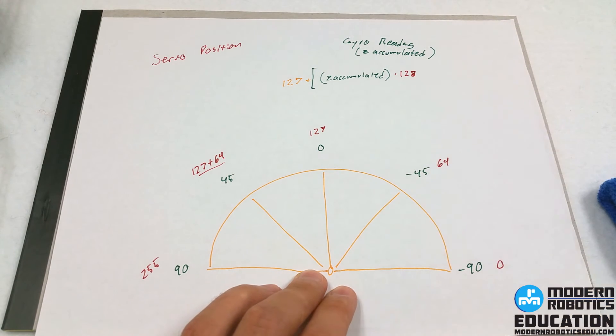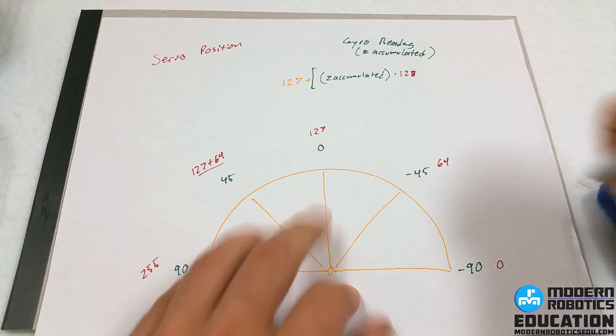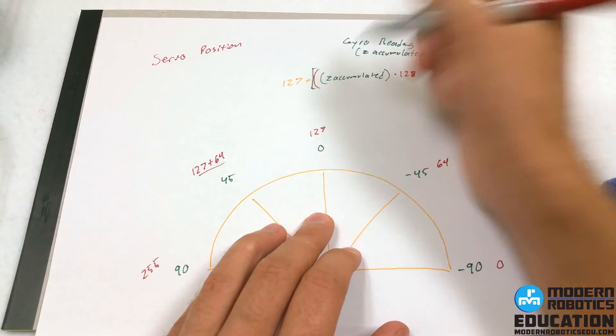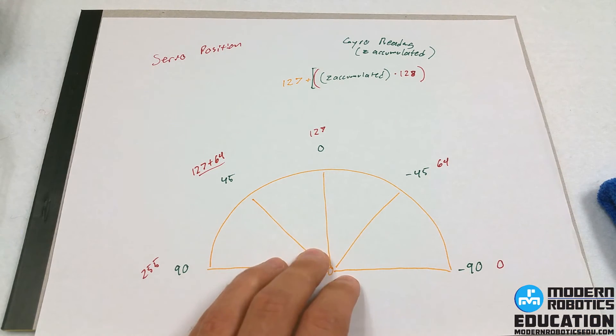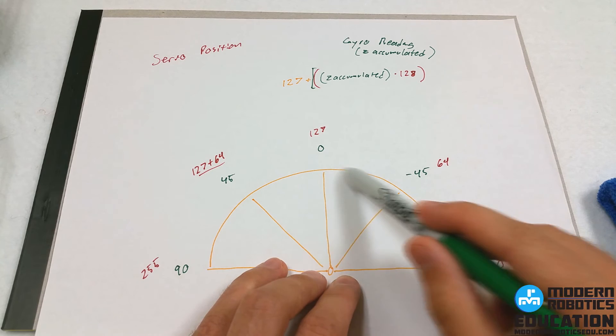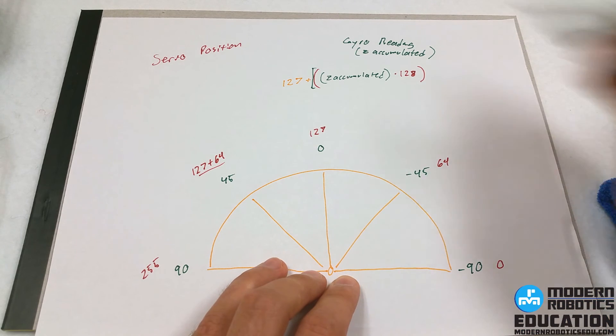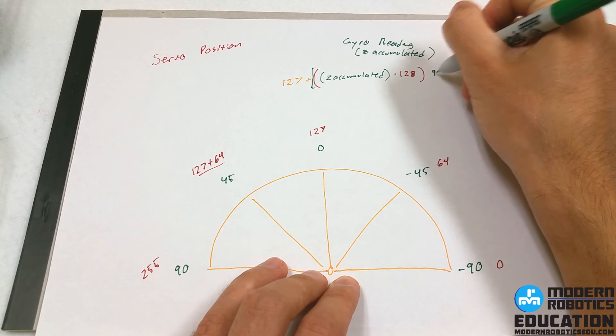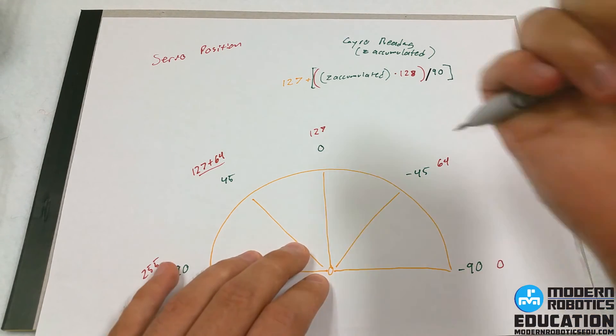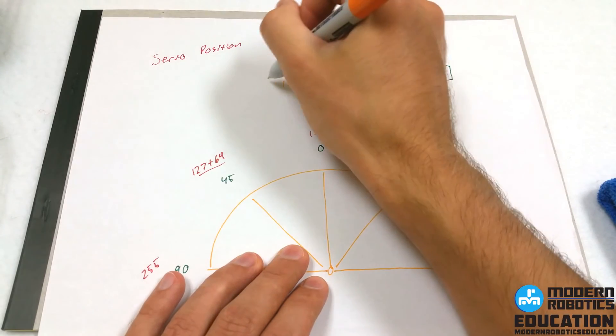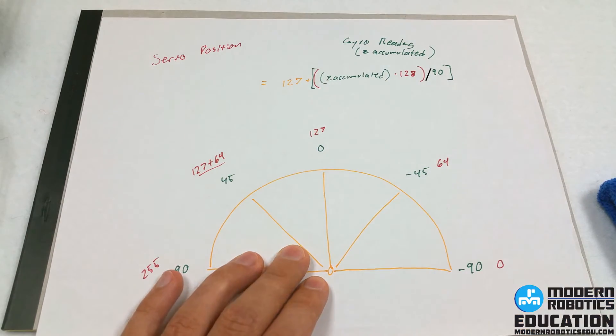And that one is actually 128, not 127. Another bracket. And then we're going to need to divide by 90 because there are 90 positions here. And this is what we're going to assign our servo position to.